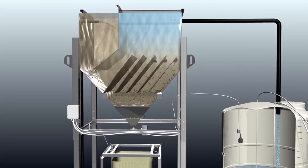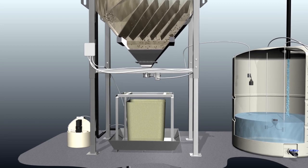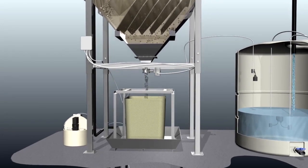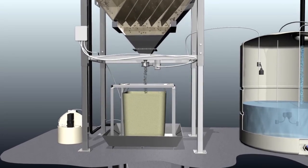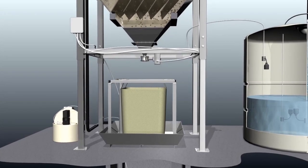Solids settle to the bottom and sludge is purged through a ball valve or optional automated purge valve into the sludge bag. The sludge skid dehydrates the solids and allows for easy disposal.